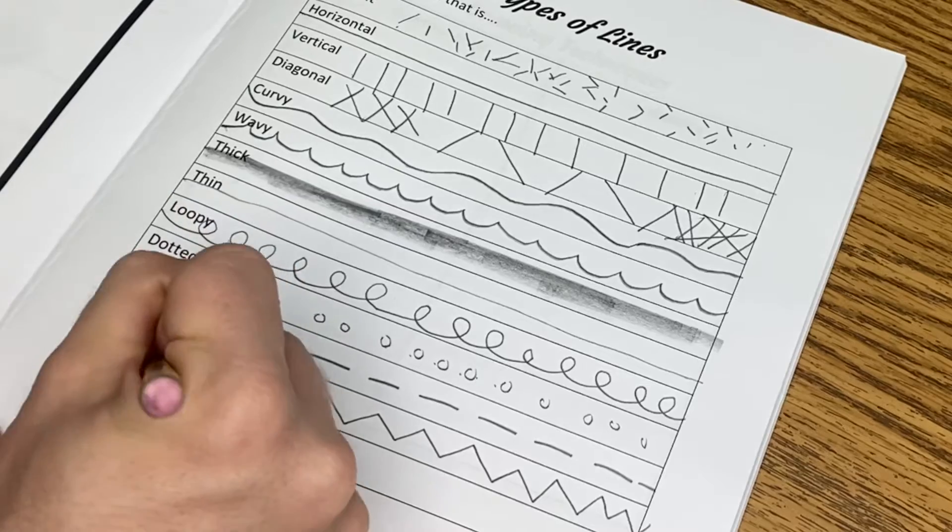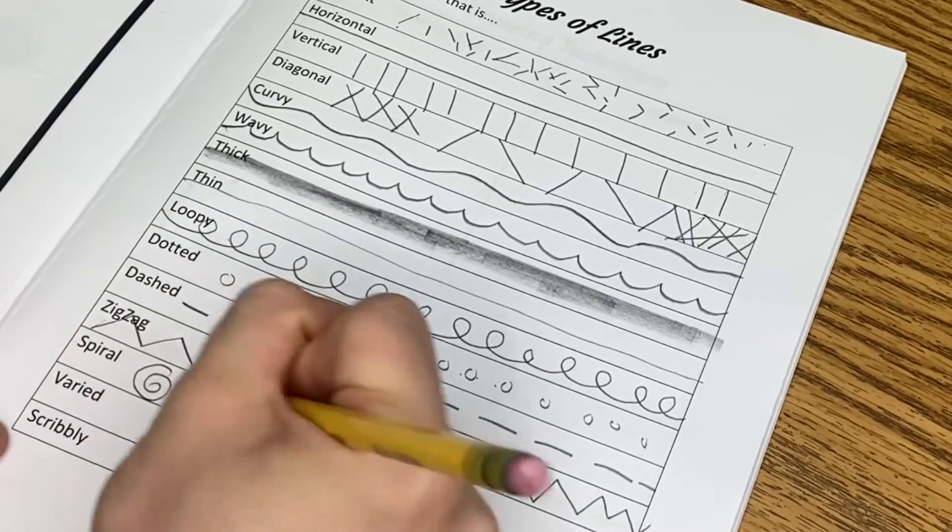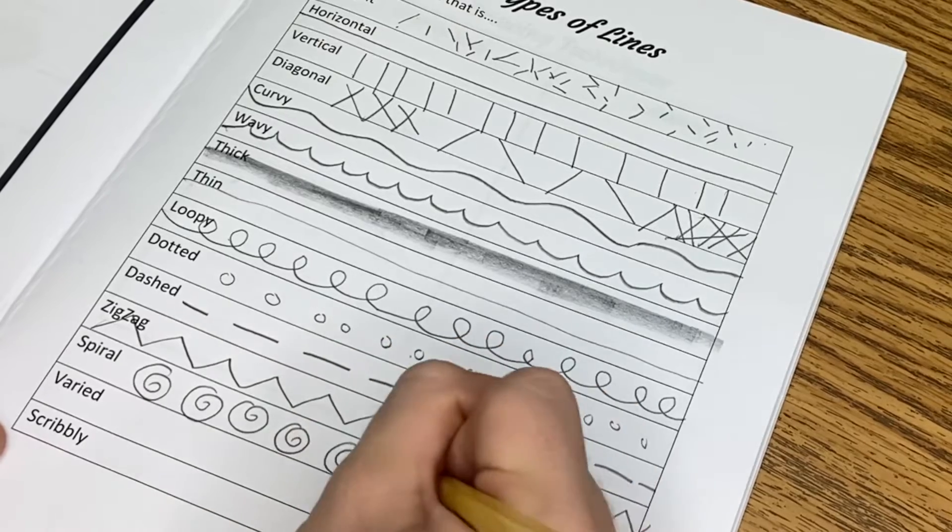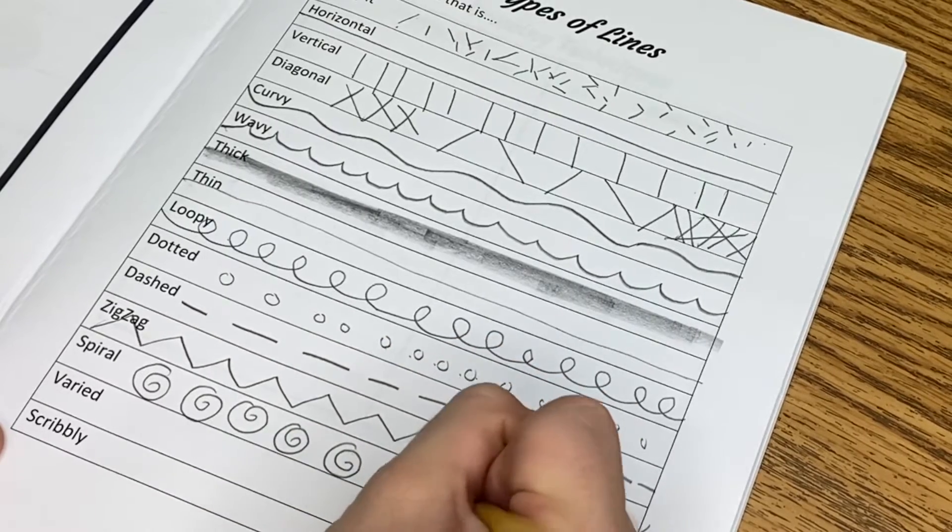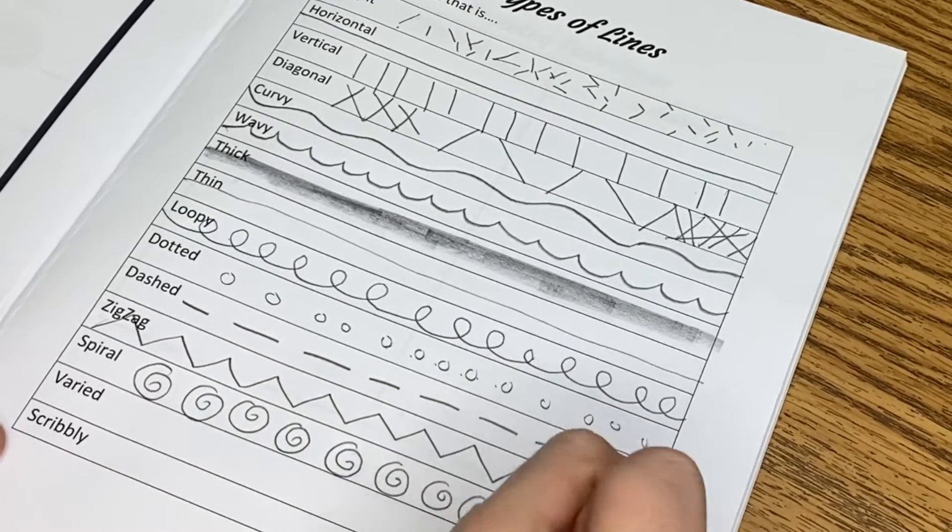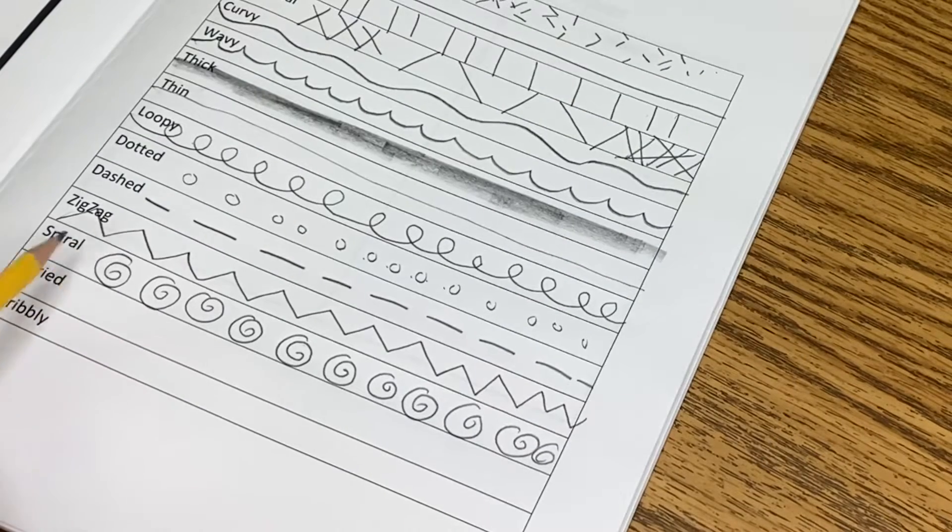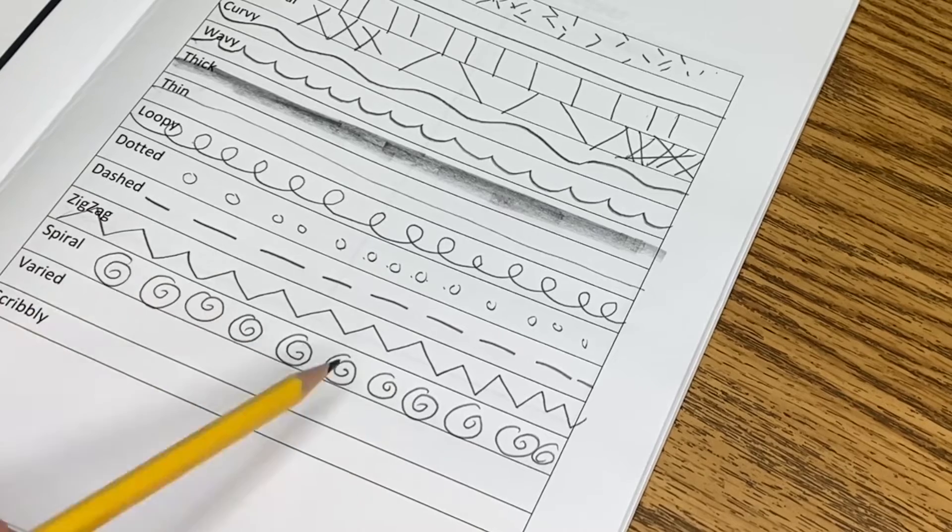Spiral. So think hurricane. Think wind emoji. A spiral is like a circle that just keeps on going until you can't get any smaller. Go ahead and make sure you have zigzag and spiral.